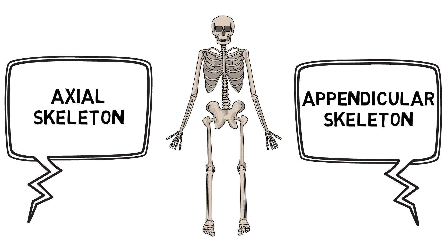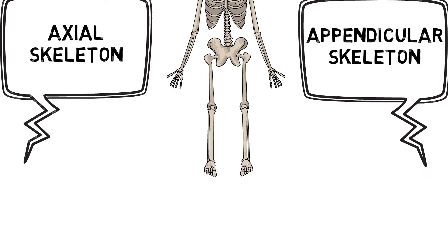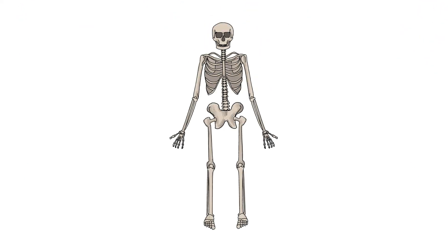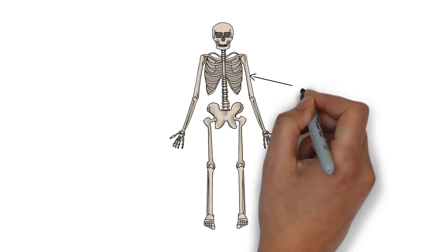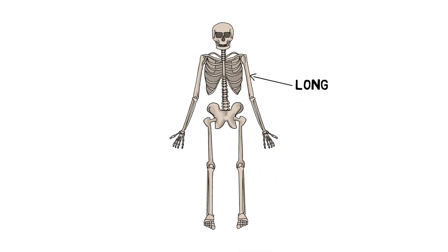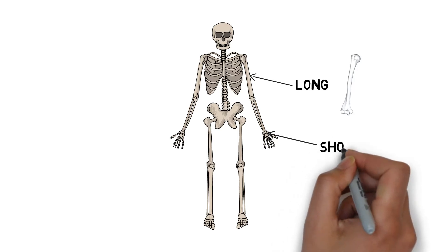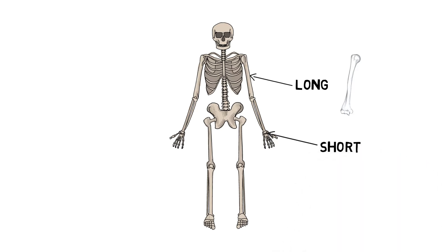Altogether, we have a total of 206 bones throughout our body, which are made up of five different types of bones. Long bones have a cylinder-type shaft with widened ends, such as the humerus or femur. Short bones are cube-shaped and are similar in length and width, such as carpals in our hands or tarsals in our feet.